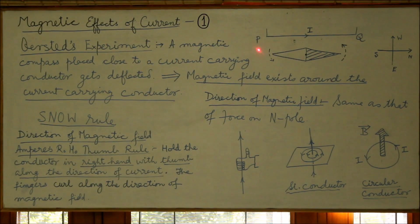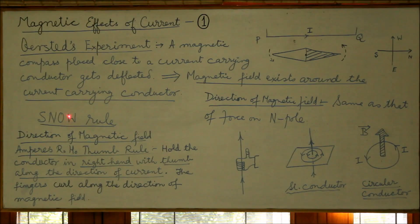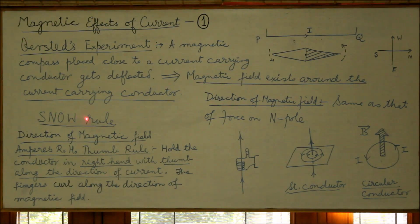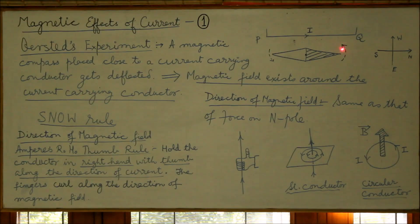According to the SNOW rule, if current in a conductor flows from south to north — as shown here — and the conductor is held over the compass, then the north pole is deflected towards west. You can see west here; the north pole deflects to the west. This is the historic experiment that led to the discovery of the magnetic effect of current.